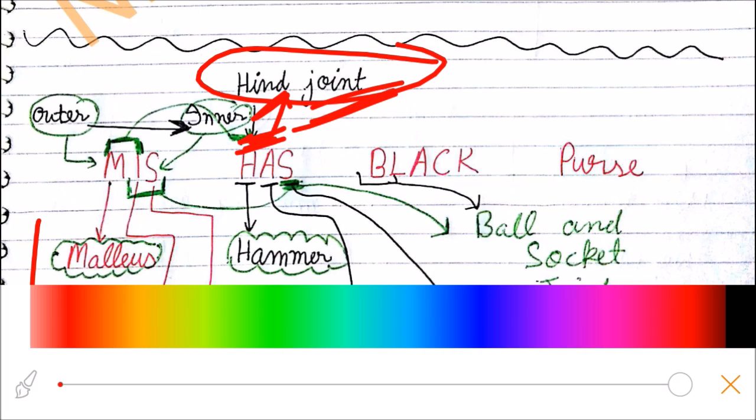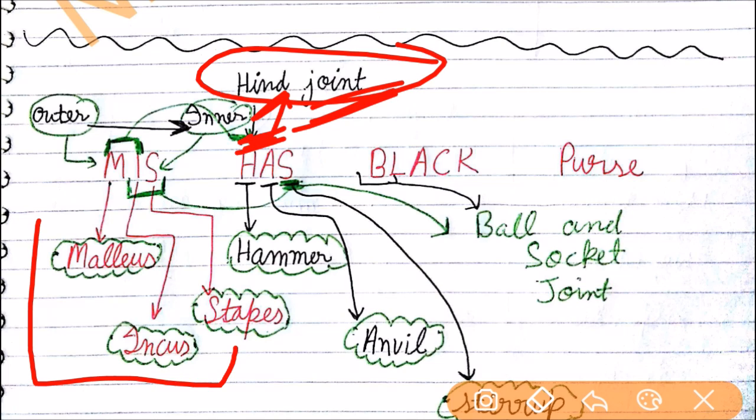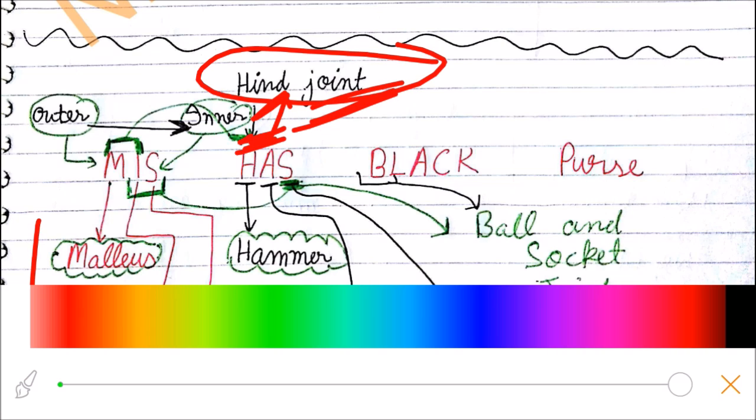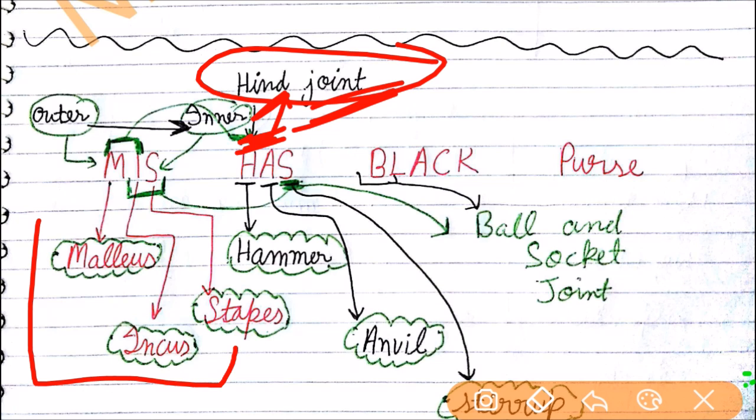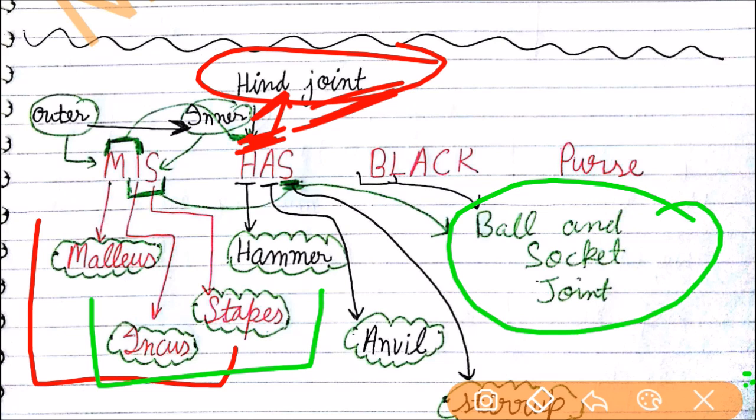Now let's see what is the joint which is present between incus and stapes. In between incus and stapes, you will take B from Black here, which comes to be ball, and S for socket. So ball and socket joint between incus and stapes.